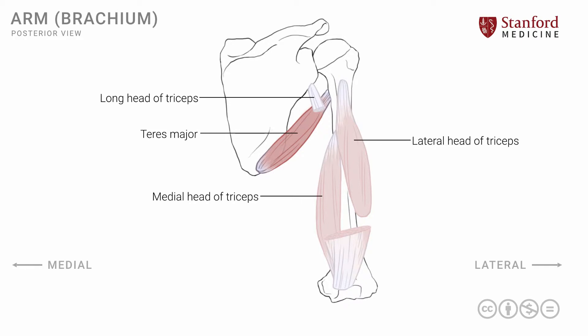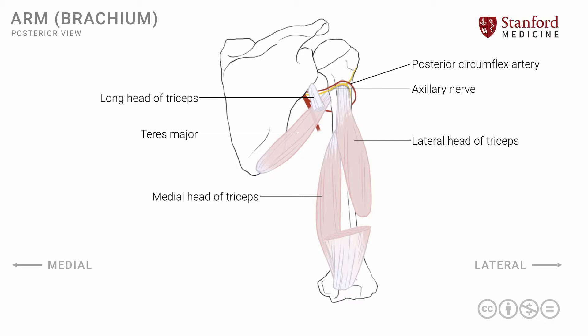Note that the axillary artery is in its location in the axilla, and as it crosses the teres major muscle, it becomes the brachial artery. There is an important structure situated in this area, which is a branch of the axillary artery known as the posterior circumflex humeral artery, seen here. This artery is accompanied by a nerve known as the axillary nerve, and both of these structures wrap around the surgical neck of the humerus. This is an important area where injuries or fractures might occur, and this type of injury can damage the axillary nerve and the posterior circumflex artery.